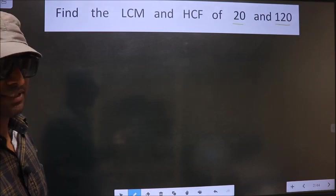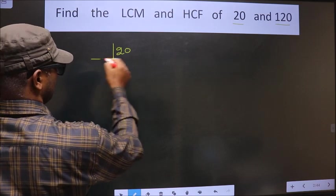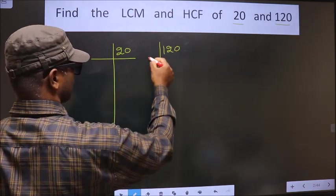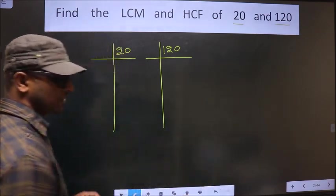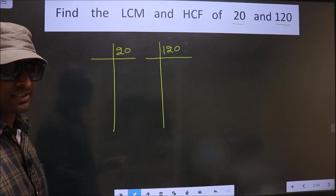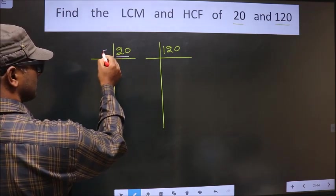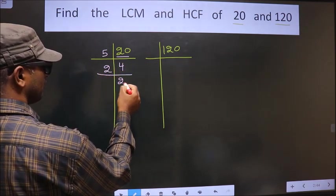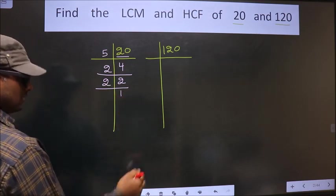20, 120. Okay, next. Here we have 20. 20 is 5 times 4. Now 4 is 2 times 2. Now 2 is a prime number so we take 2, 1 times 2 is 2.